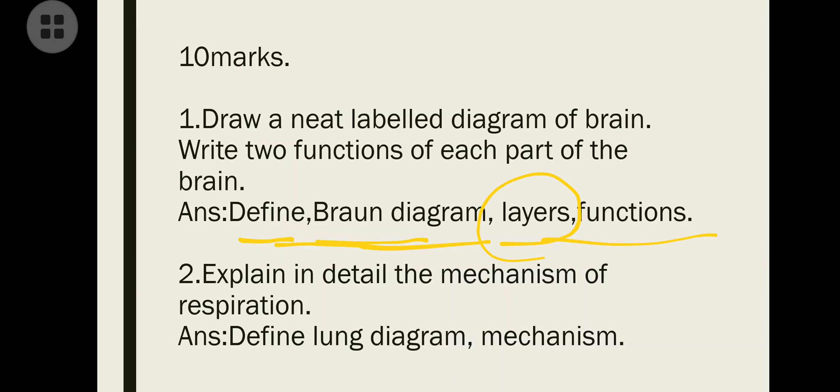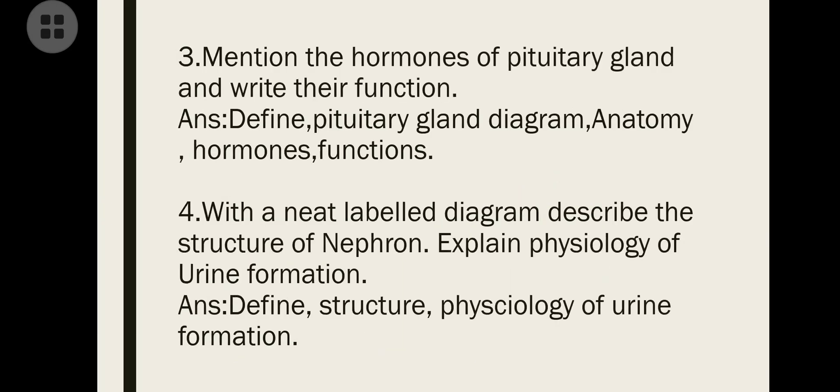Next, explain in detail the mechanism of respiration. Define lung, draw the lung diagram, then write the mechanism of respiration. If space remains, write the lung capacity also. Then, mention the hormones of the pituitary gland and write their functions. First define pituitary gland, then draw the diagram showing the anatomy - the size, anterior and posterior parts, then the hormones and their functions.